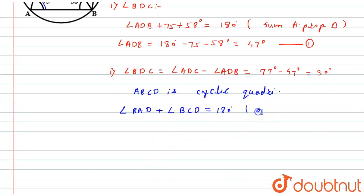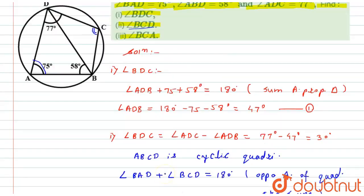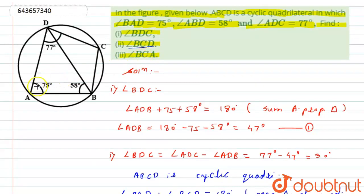Because opposite angles of a cyclic quadrilateral are supplementary, angle BCD equals 180 minus angle BAD. Since angle BAD is 75 degrees, angle BCD equals 105 degrees. That is our second answer.